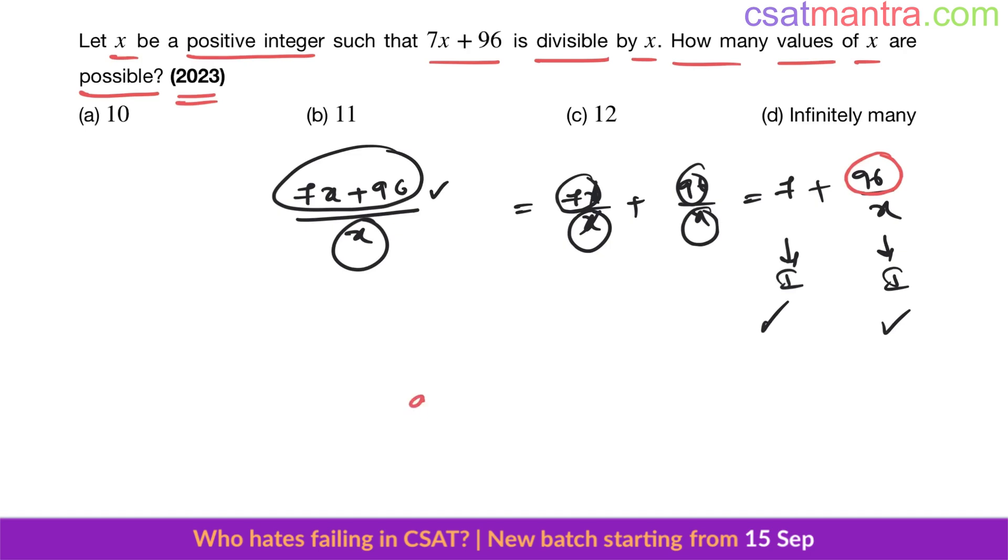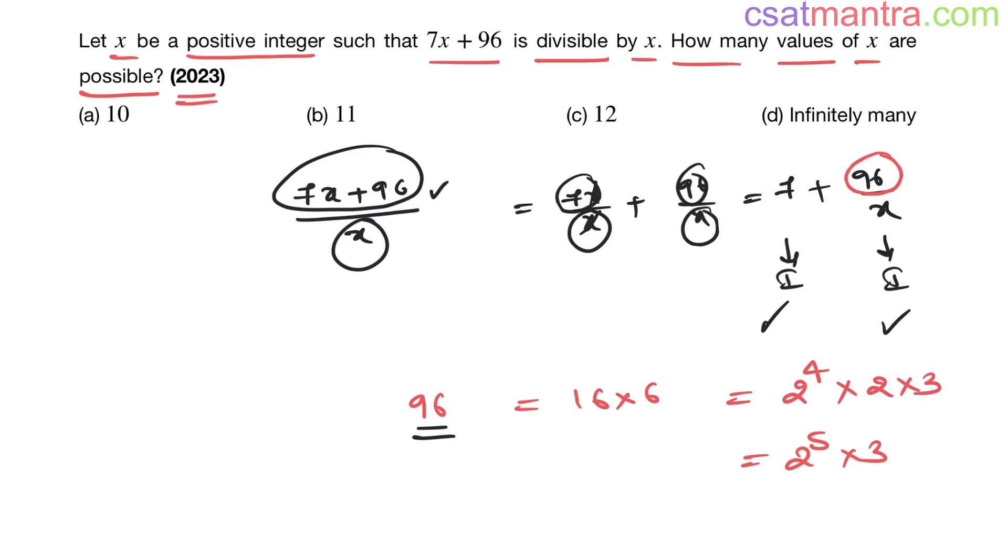So how many factors of 96 are there? This is what the question is. 96 you can write it as 16 times 6. 16 is 2 power 4, 6 is 2 into 3.